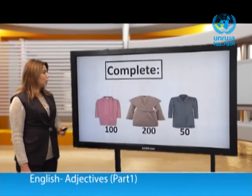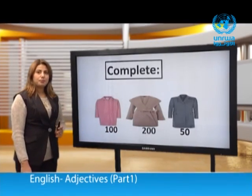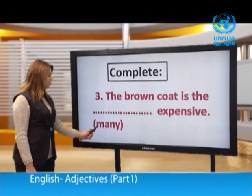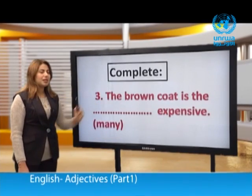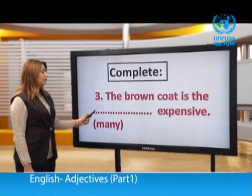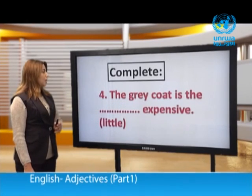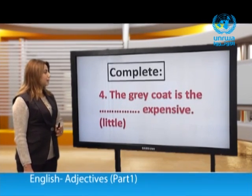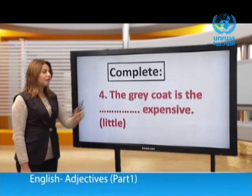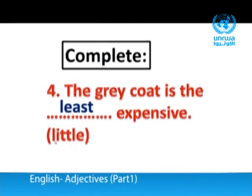Number three: Look at these three coats — one hundred pounds, two hundred pounds, and fifty pounds. The brown coat is the most expensive. Number four: The grey coat is the least expensive, because 'little' gives us the superlative 'least.' The grey coat is the least expensive.